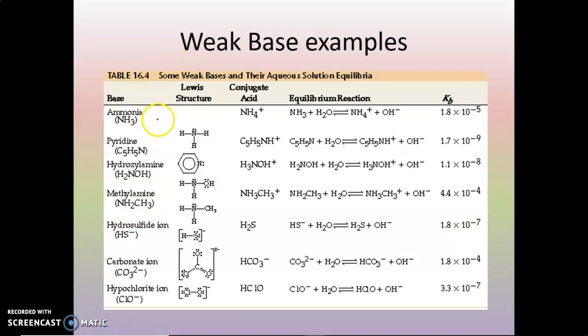Here are some examples. Ammonia is our greatest example. In NH3, its conjugate acid is NH4+. The equilibrium reaction has your base plus water giving you your conjugate acid plus hydroxide. The Kb value for ammonia is 1.8 times 10 to the minus 5, which gives you the extent to which it forms a base every time the reaction occurs.